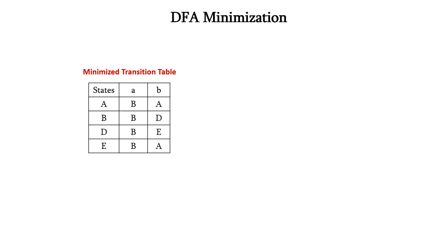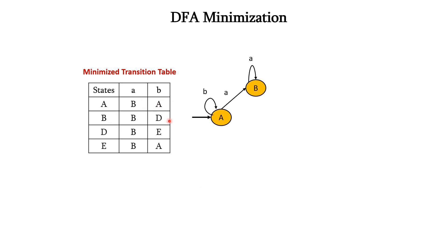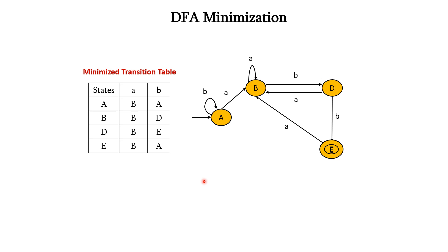Now, let us construct the minimized DFA using this minimized transition table. Our initial state is A. A on input A goes to B, and A on input B goes to A itself, as shown here. Then, B on input A goes to state D. Next, D on input A goes to B, and D on input B goes to state E. E on input A goes to B, and E on input B goes to A. Thus, we have the minimized DFA here.